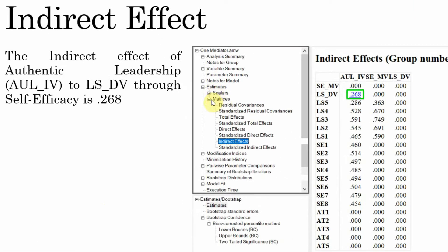In our model, we have only one possible mediator: authentic leadership to life satisfaction through self-efficacy. If you have more than one mediator, that will be discussed in another tutorial. The indirect effect is the effect of authentic leadership on life satisfaction through self-efficacy. In this example, the IV is authentic leadership, the DV is life satisfaction, and the MV is self-efficacy. Since we have only one mediator, this is the specific indirect effect — the total effect passing from IV to DV through the single mediator.